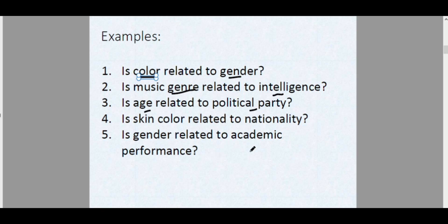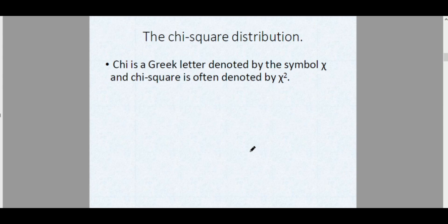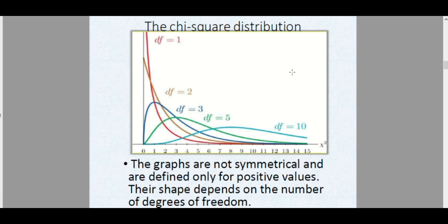If you want to examine the relationship between two categorical variables, we use the chi-square test of independence. Chi is a Greek letter denoted by the symbol χ, and chi-square is denoted χ². Its distribution looks like this — if you compare it to the normal distribution, it is not symmetrical. The shape depends on the number of degrees of freedom. As the degrees of freedom keep increasing, the distribution will approach a normal distribution.